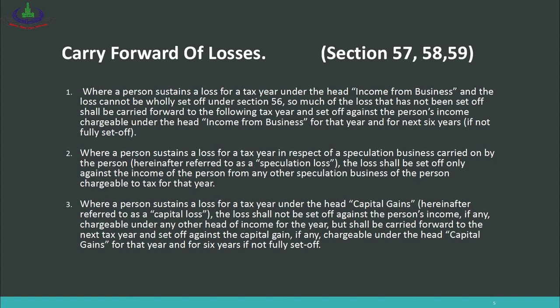Number 1: Where a person sustains a loss for a tax year under the head income from business and the loss cannot be wholly set off under Section 56, so much of the loss as has not been set off shall be carried forward to the following tax year and set off against the person's income chargeable to tax under the head income from business for that year, and for the next six years if not fully set off. So if a business loss is not fully adjusted in the current year and there is no business income even in the next year, you can carry forward the loss for a maximum of six years.